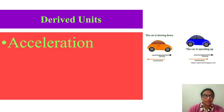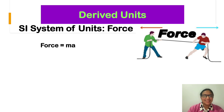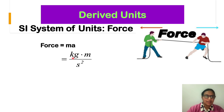Acceleration is the rate of change of velocity, and its unit is meter per second squared. Another example of a derived unit is force. Force is mass multiplied by acceleration. Since mass is kilogram and acceleration is meter per second squared, the unit of force is kilogram meter per second squared.